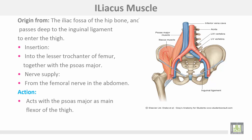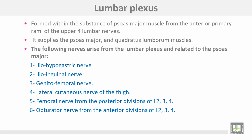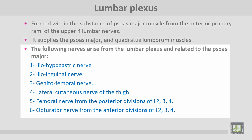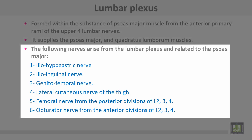This is the femoral nerve. The lumbar plexus is formed within the substance of the psoas major muscle from the anterior primary rami of the upper four lumbar nerves. It supplies the psoas major and quadratus lumborum muscles. The following nerves arise from the lumbar plexus and are related to the psoas major: ilio-hypogastric nerve, ilio-inguinal nerve, genito-femoral nerve, lateral cutaneous nerve of the thigh, femoral nerve, and obturator nerve.